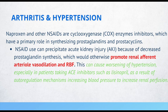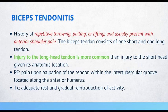Biceps tendinitis. Patients with this condition have a history of repetitive throwing, pulling, or lifting and usually present with anterior shoulder pain. The biceps tendon consists of one short and one long tendon. Injury to the long tendon is more common than injury to the short head given its anatomic location. Physical exam may reveal pain upon palpation of the tendon within the intertubercular groove along the anterior humerus. Treatment requires adequate rest and gradual reintroduction of activity.